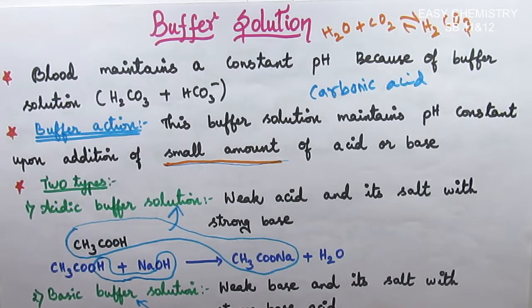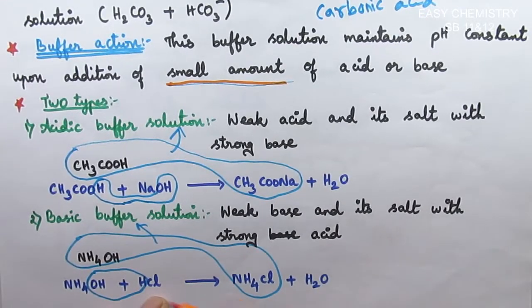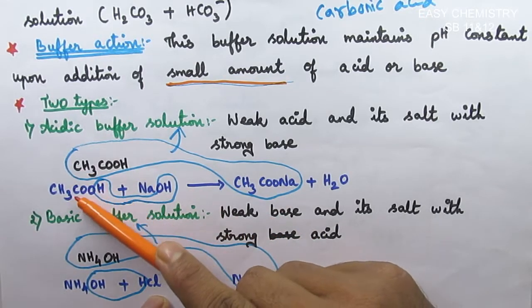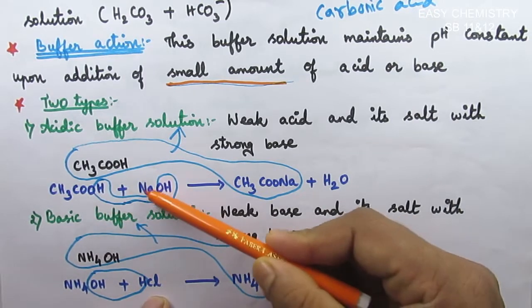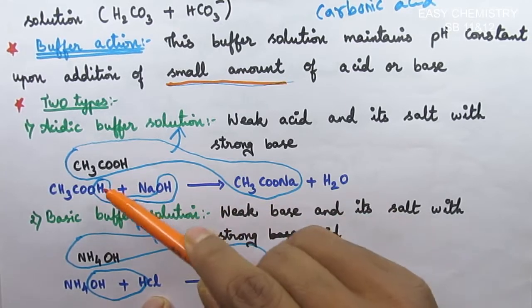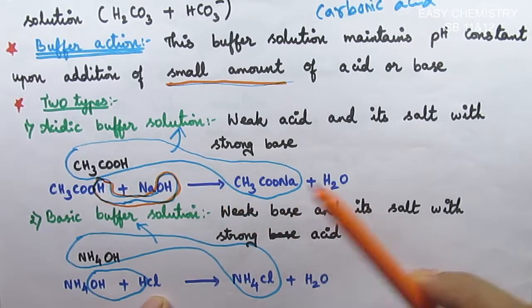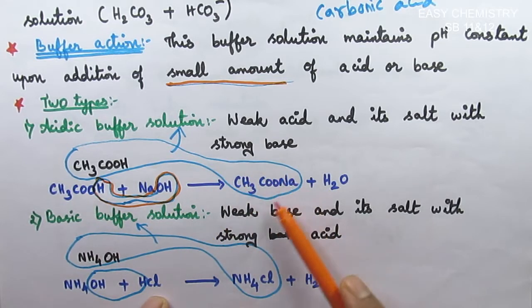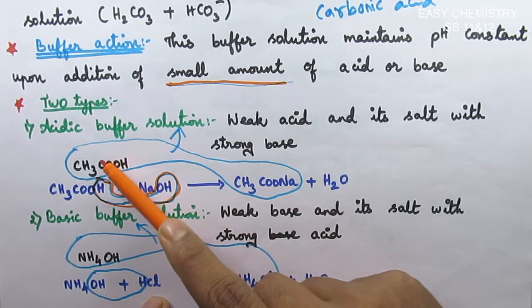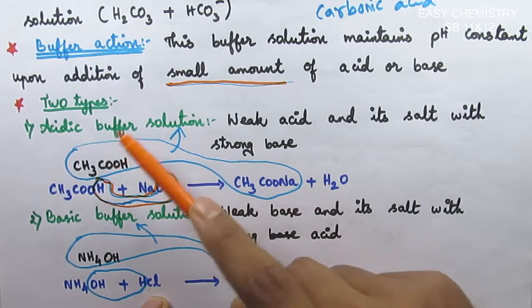There are two types of buffer solutions. One is acidic buffer solution and the other is basic buffer solution. Acidic buffer solution means one weak acid and its salt. For example, acetic acid is CH3COOH. If you add its salt — formed by reaction with a strong base like NaOH — you get sodium acetate. So, this mixture of acetic acid and sodium acetate is called acidic buffer solution.